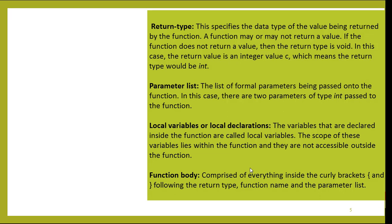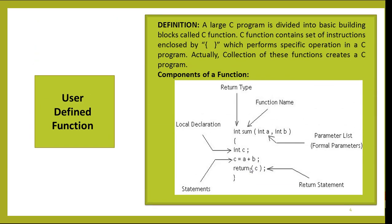Parameter list: the list of formal parameters being passed to the function. In this case, there are two parameters of type int passed to the function — 'int a' and 'int b'. Parameters used in function definitions are known as formal parameters.